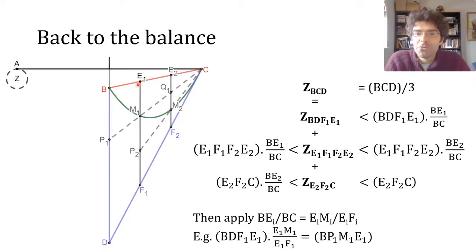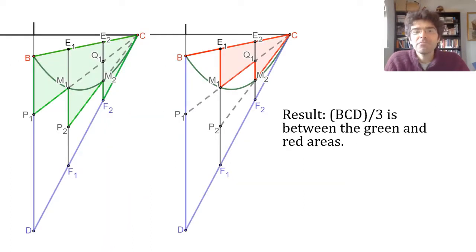In other words, this is the trapezium BP1M1E1. So if we apply this to each of the strips in turn, we can say that the area of BCD over 3, that's the total that you'd have to hang on the left, is between the area above the green line and the area above the red line.